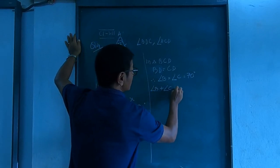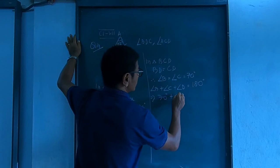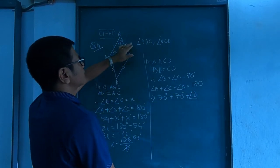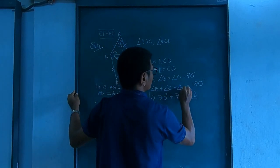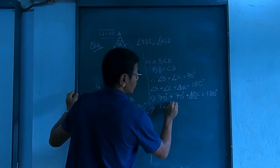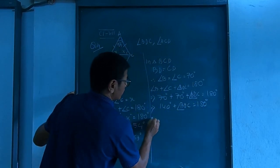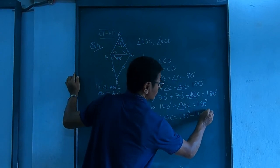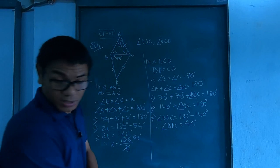Angle B plus angle C plus angle D together is 180. B is 70, C is 70 — we do not know angle D. The angle D we are calculating is angle BDC. So 140 plus angle BDC equals 180. Therefore, angle BDC equals 180 minus 140, which is 40 degrees. Angle BDC is 40 degrees.